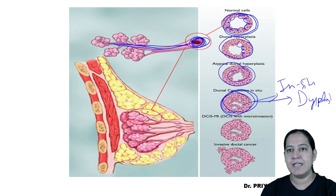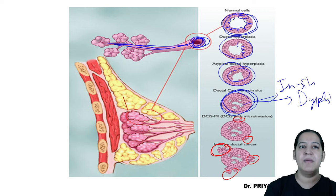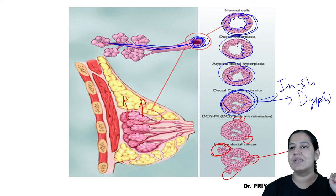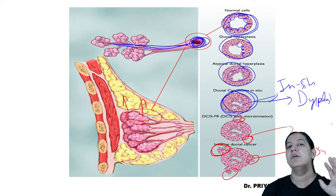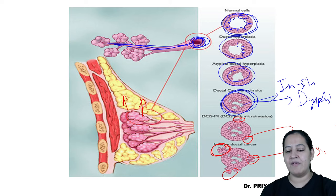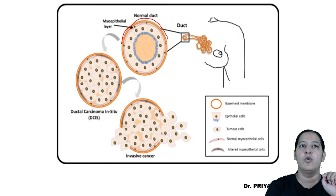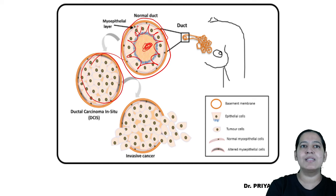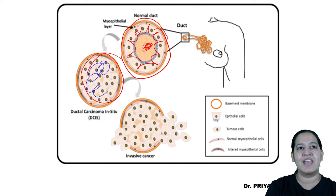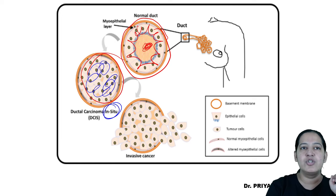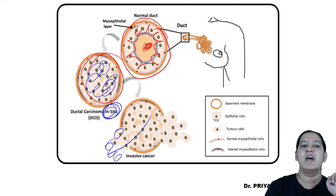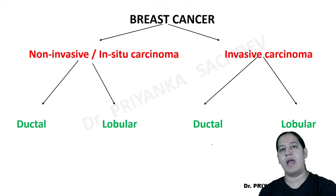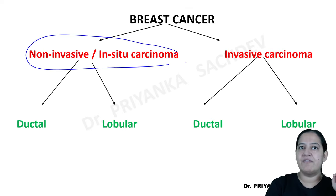But see the next diagram — here cells start coming out. Tumor cells breach the basement membrane and come out into the stroma. So this is known as invasive. In between the two there is micro-invasive. So: non-invasive means tumor cells fill the duct cavity but don't come out; invasive means they breach the basement membrane and come out into the stroma. That is the meaning of in-situ and invasive.